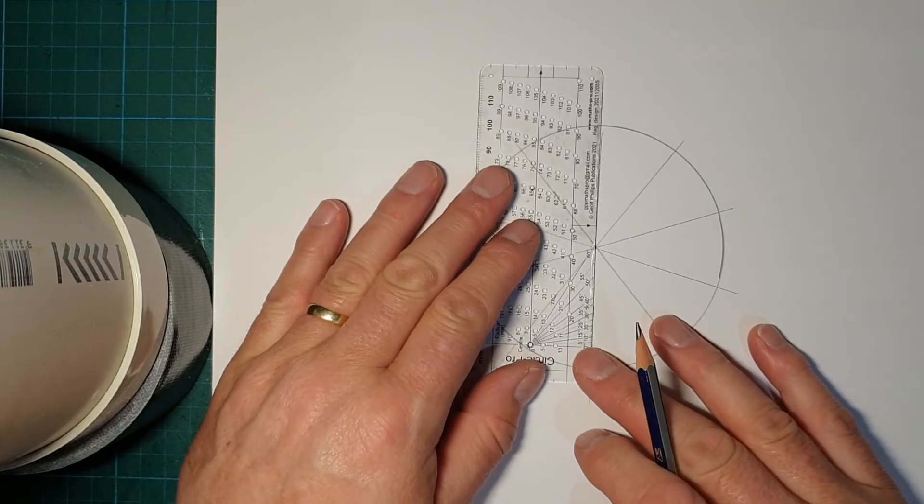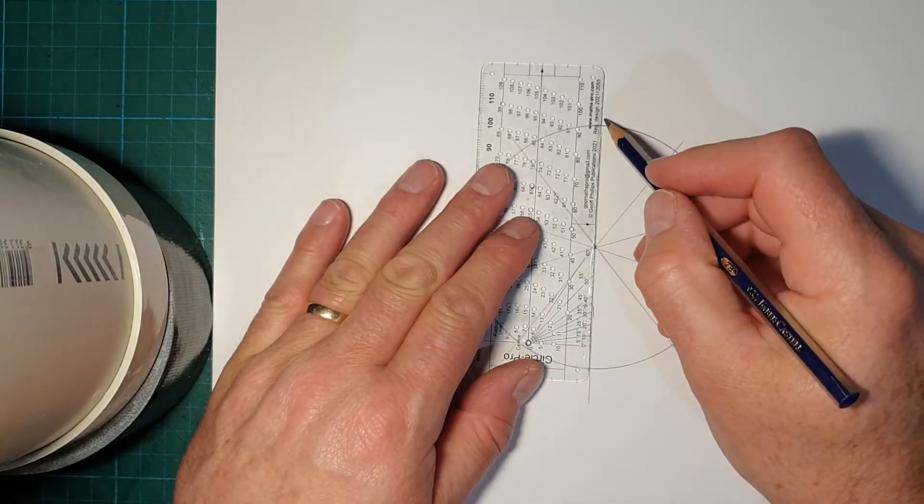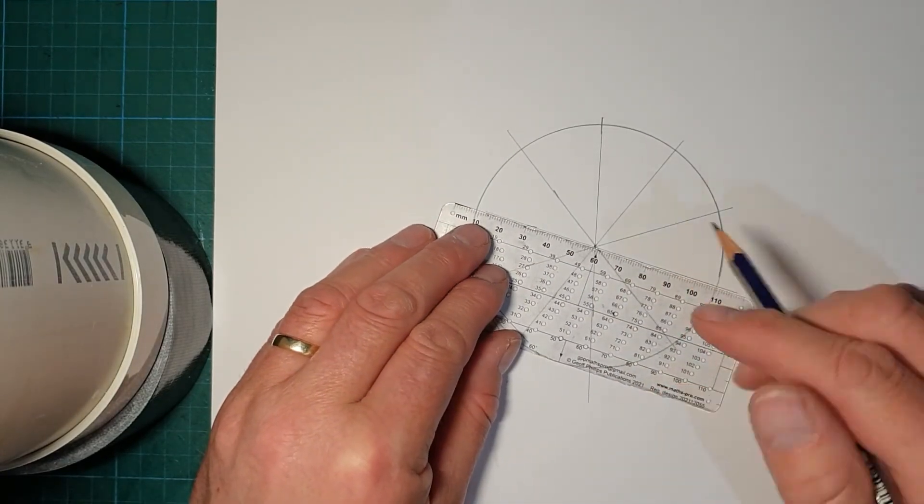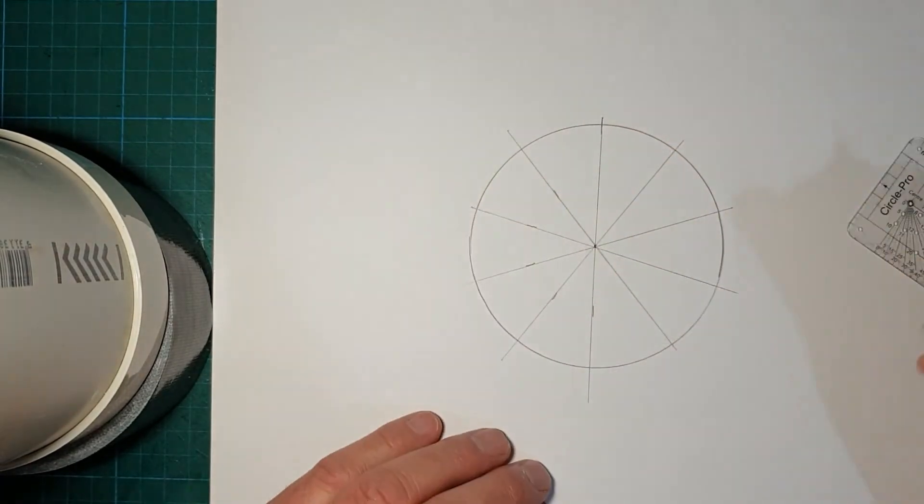Just extend this line a little bit until it hits the circle. And this one, I should have done them a bit longer in the first place. And here we have the points.